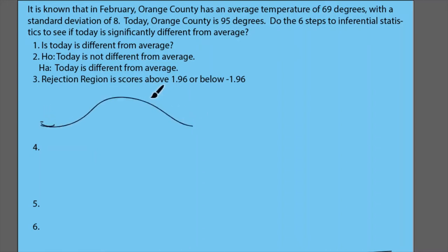So here's 1.96. Here's negative 1.96. And then I want to make sure I'm clear that these are my rejection regions. So I'll label them RR to make sure I'm clear.